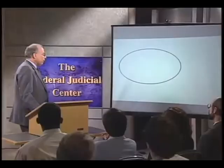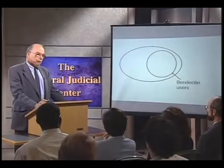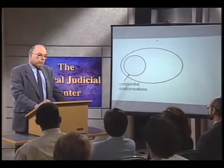Let us go schematically through the considerations in this issue. This oval, shown diagrammatically, represents a population of pregnant women. Within this oval, there is a subset of women who've used Bendectin in pregnancy, shown by the circle. Within this group of pregnant women, there is also a subset of women who deliver a child with a malformation.